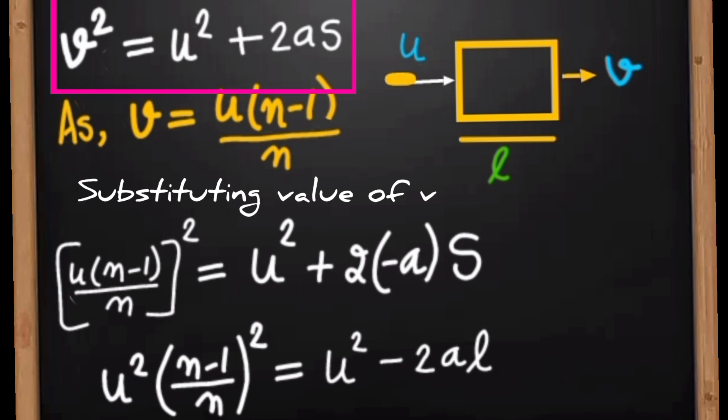Now using third equation of motion, we want to calculate initial velocity in terms of width of block and lost velocity after passing through this block. So we want to substitute the final velocity v as we have already calculated.